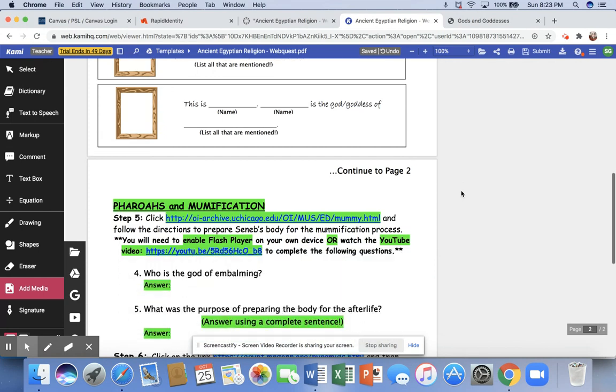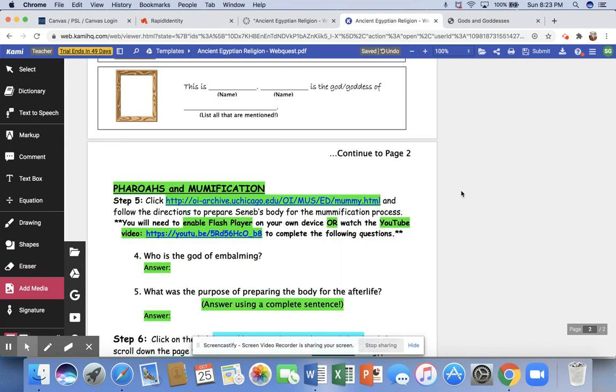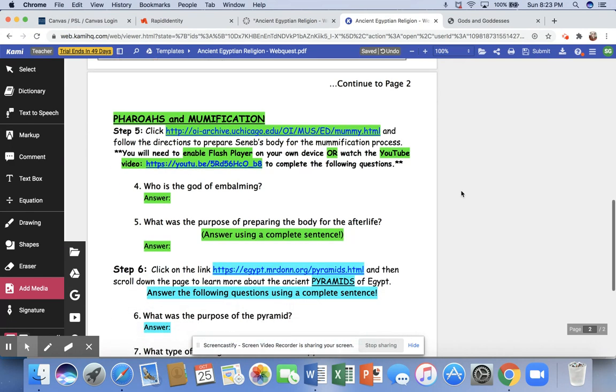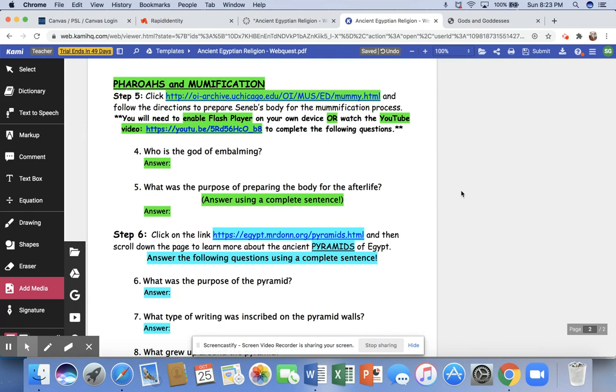Once you're done with the first part that is noted in yellow, you're going to continue to page 2 and follow the directions for the green section, the pharaohs and the mummies.